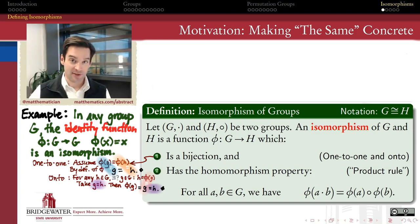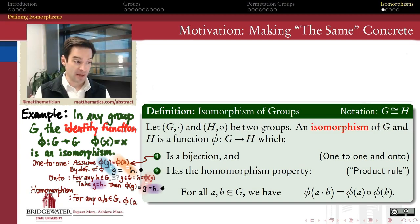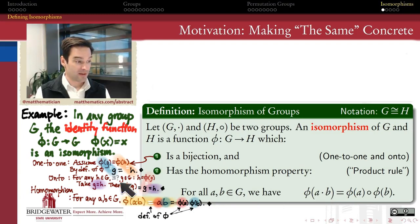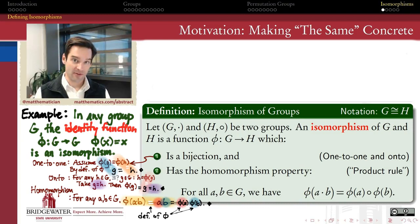We could have proven that in an elementary set theory class. What is abstract algebra is to verify the homomorphism property — the respect this function has for the operation in group G. Our burden of proof is to show that for any elements A and B in group G, Φ(A·B) = Φ(A)·Φ(B). The identity function carries A·B onto itself. But A = Φ(A) and B = Φ(B), so A·B = Φ(A)·Φ(B), and therefore Φ(A·B) = Φ(A)·Φ(B). The identity function is not only a bijection but also has the homomorphism property, and therefore it is an isomorphism.